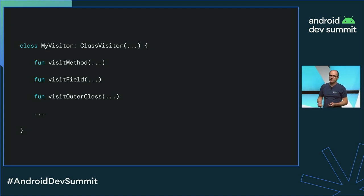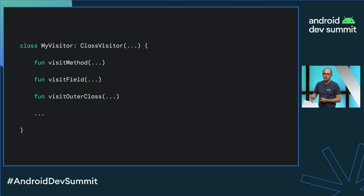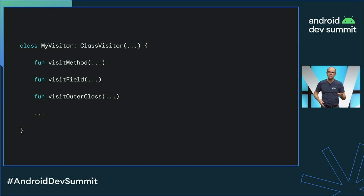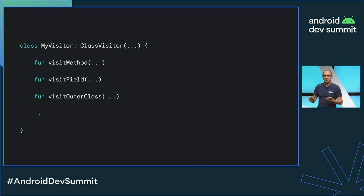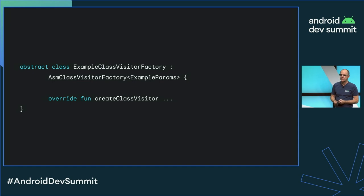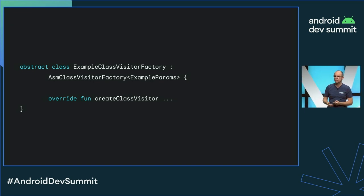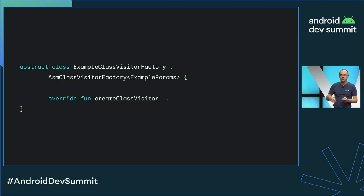The ASM library has been around for at least 20 years. You write a small visitor-style interface where you can visit methods, fields, and classes. This is bytecode manipulation, not as convenient as source files, but it is machine readable and well-documented. You register your visitor using a factory method, and then register your factory using the Variant API — you simply declare that for a given variant you want this factory to create the visitor. We take care of all the Gradle-related steps around incrementality and caching.